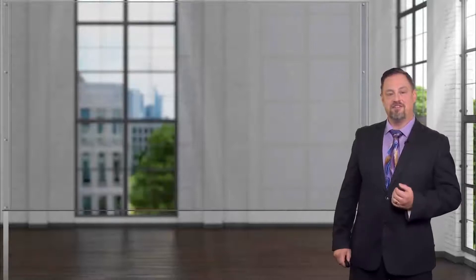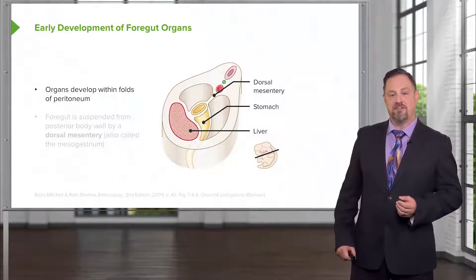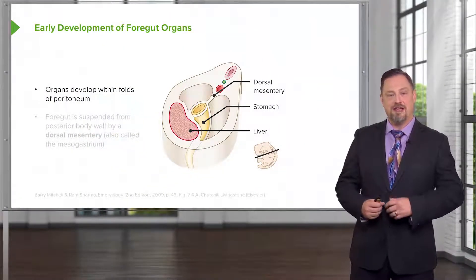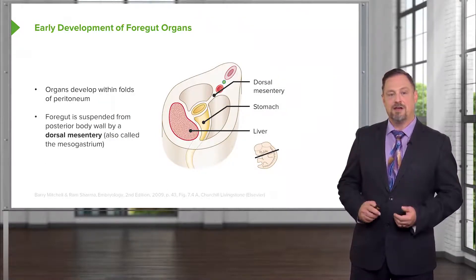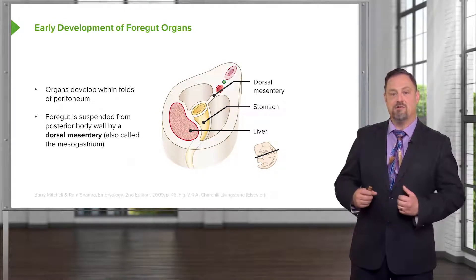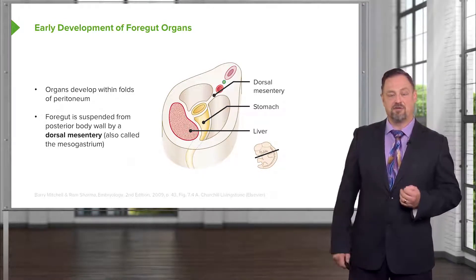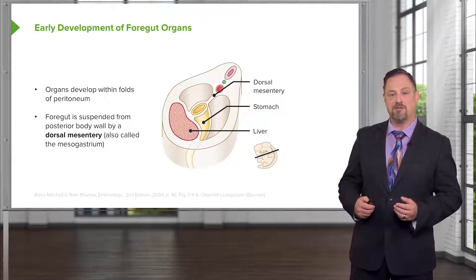We'll continue our investigation of how the foregut develops by looking at how the organs of the foregut rotate, migrate, and develop a set of mesenteries and specialized structures called omenta. We've already seen how the stomach rotates and balloons out to create a greater curvature and a lesser curvature. It's hanging from its dorsal mesentery and as it moves, it's going to do some interesting things to this dorsal mesentery as other organs develop and force the stomach to rotate.